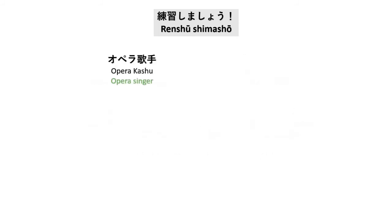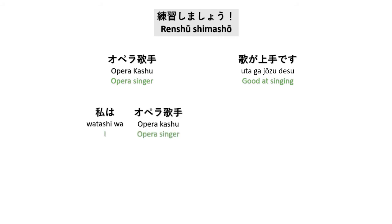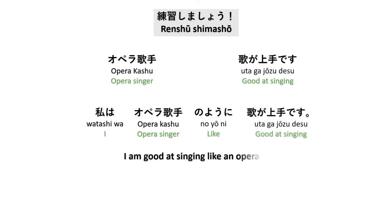Opera kashu — opera singer. Uta ga jouzu desu — good at singing. So the sentence would be: Watashi wa opera kashu no yoni uta ga jouzu desu — I am good at singing like an opera singer.